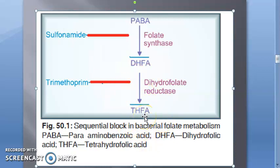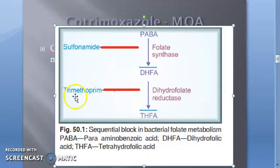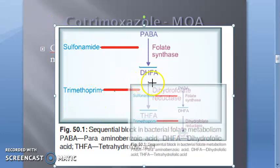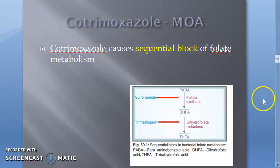Without active folic acid, the bacteria cannot synthesize purines and pyrimidines and cannot replicate its DNA. Trimethoprim alone is bacteriostatic, but when both agents are combined, the sequential block of two steps in the same pathway results in a bactericidal effect. This is how you explain the sequential block in an exam.